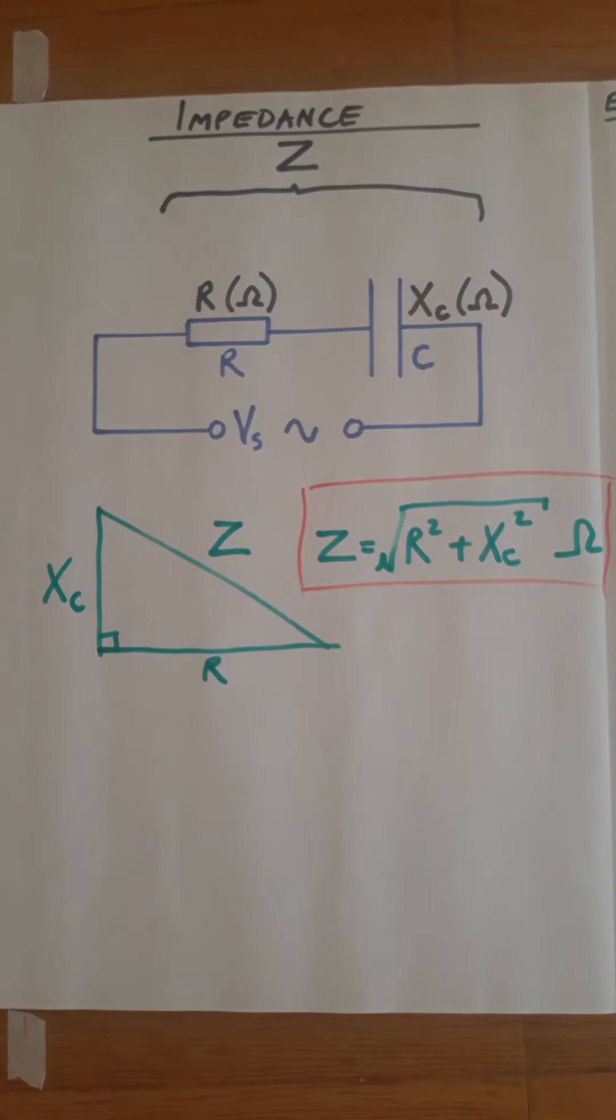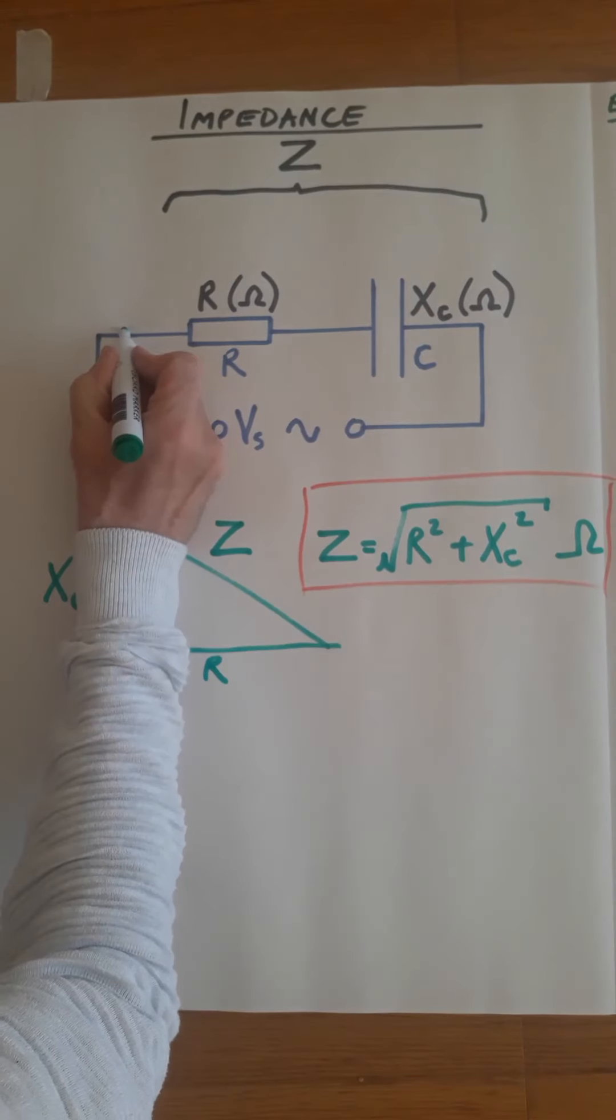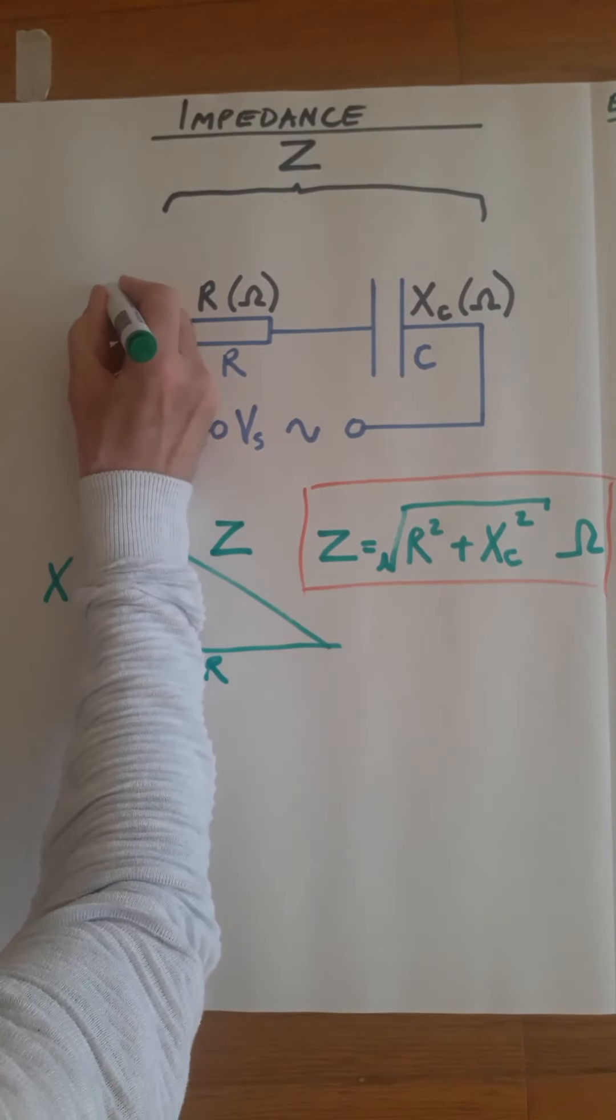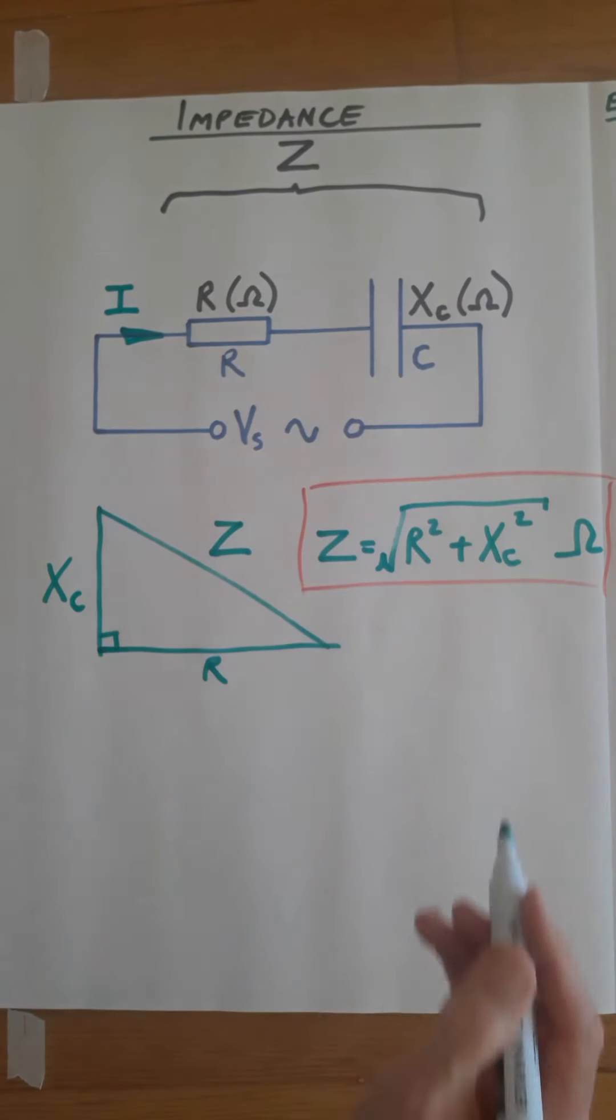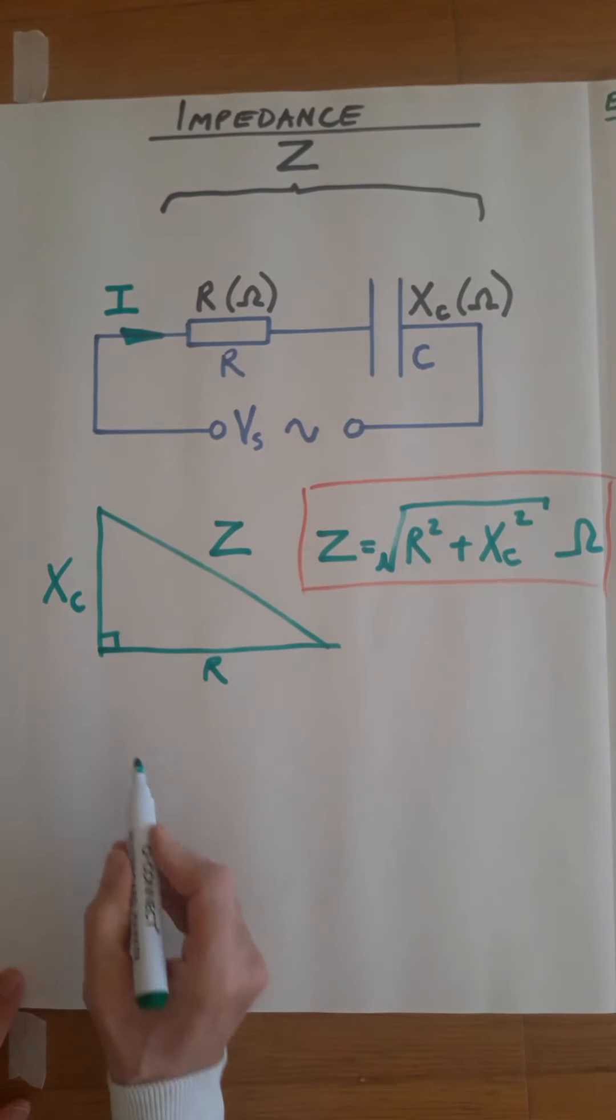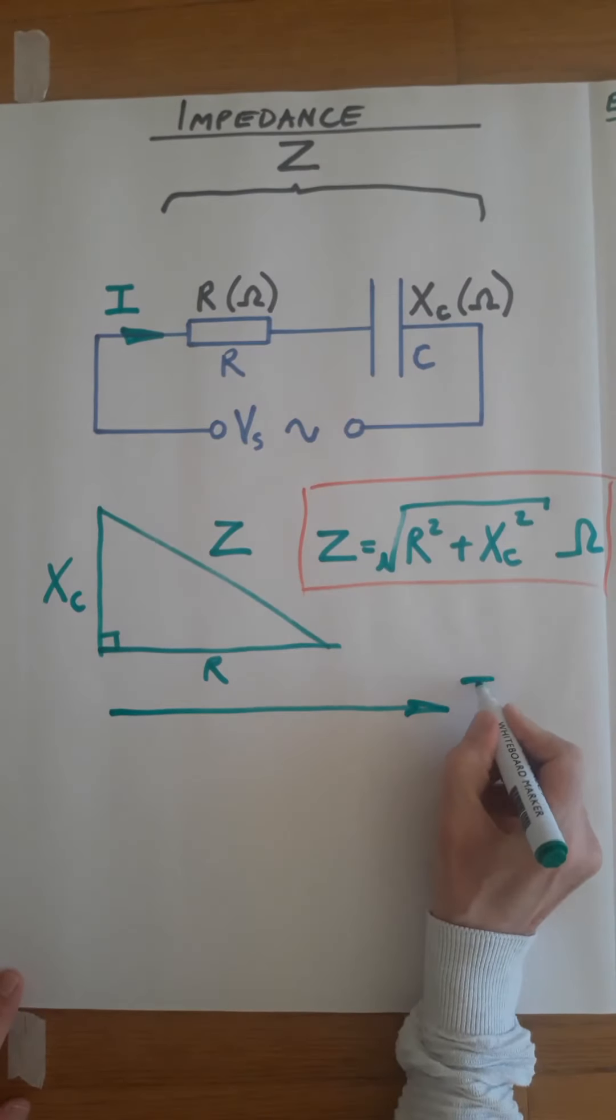Let's produce the phasor diagram for the circuit. As previously, this is a series circuit. Current goes through all parts of the circuit, so current is the first line that we draw on the phasor diagram.